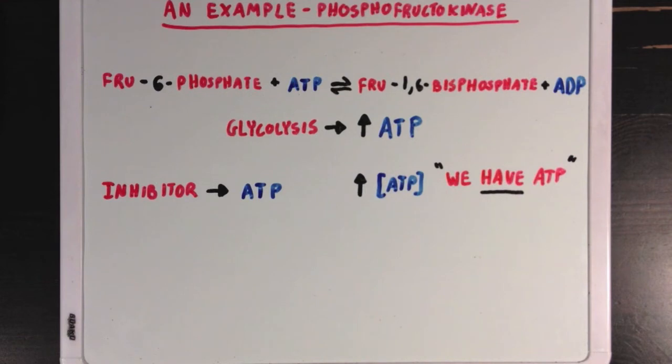This would be a good example of a negative feedback loop, since making ATP slows down glycolysis, and thus slows down the rate of ATP production.